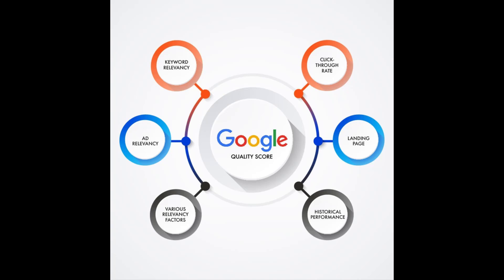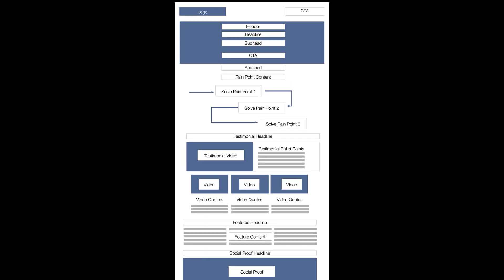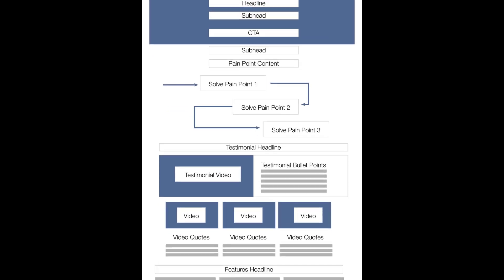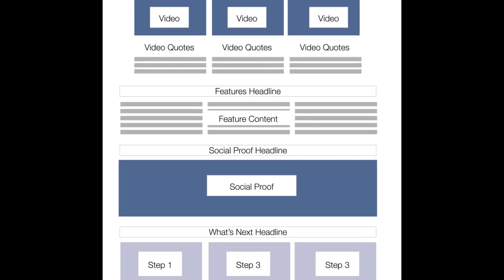Advertising platforms use a similar SEO algorithm to determine your quality score — an arbitrary score given to each page based on how it relates to the keyword. This helps advertising platforms keep irrelevant information off of certain searches, but it also allows them to artificially inflate the price of a click. The code structure for this type of page is similar to the SEO structure, with a few major differences.